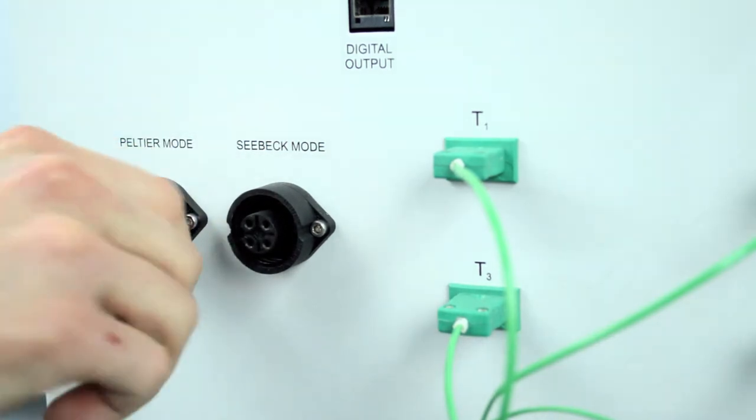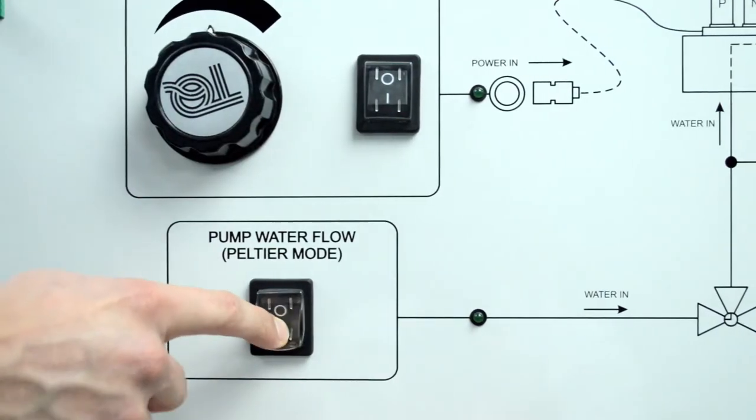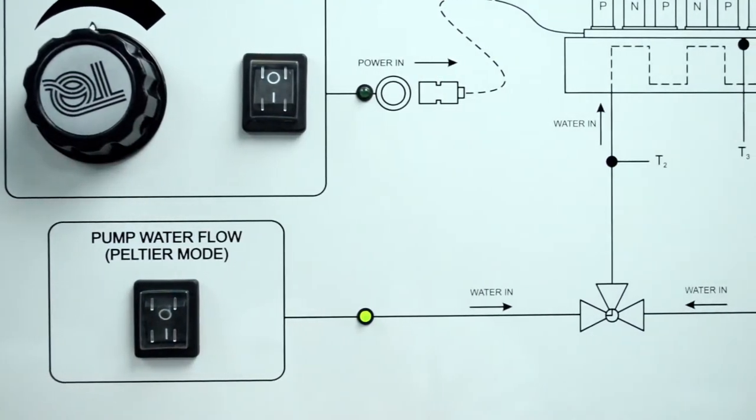When connected to the Peltier mode, the water supply is produced through a small storage tank and a water pump, creating a stable fixed flow water supply.